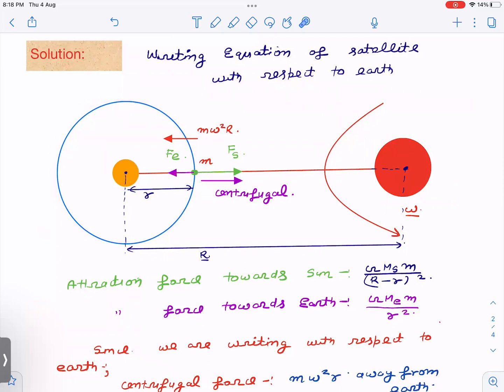What we are going to do, as written in the question, we have to write equations of a satellite. This is the small satellite with respect to the frame of reference attached to Earth. Earth is rotating with omega, so the frame of reference is also rotating with omega around the sun. Here on this, now we have to write force balance.